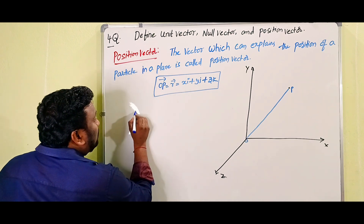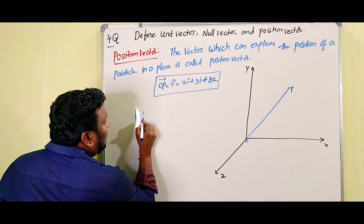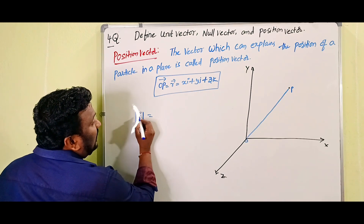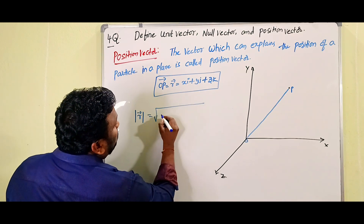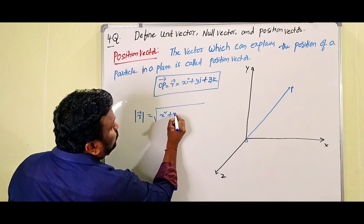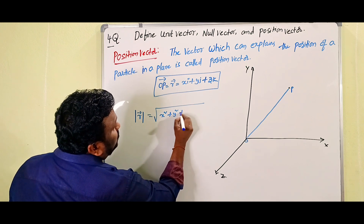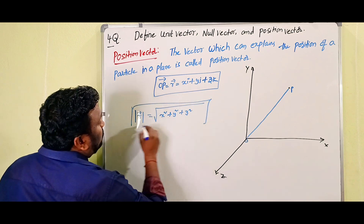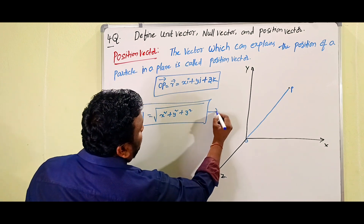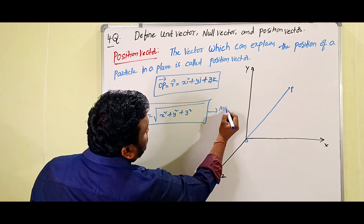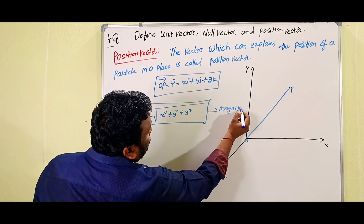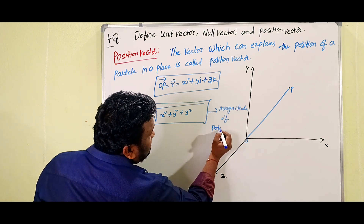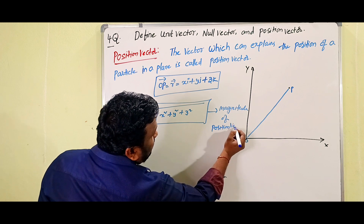Now, the magnitude of the position vector: mod of r equals the square root of x² + y² + z². So this is the magnitude of the position vector.